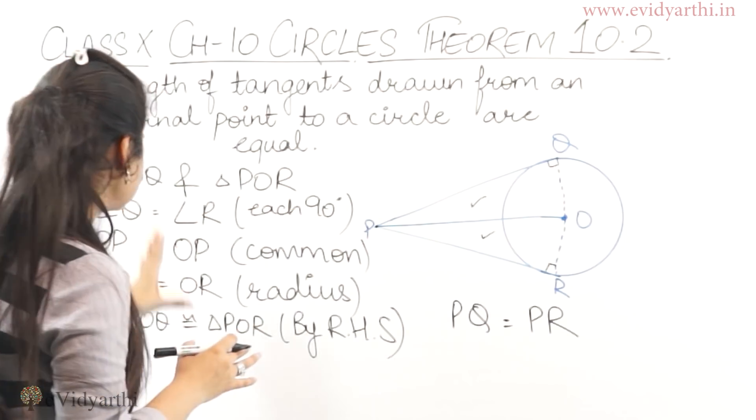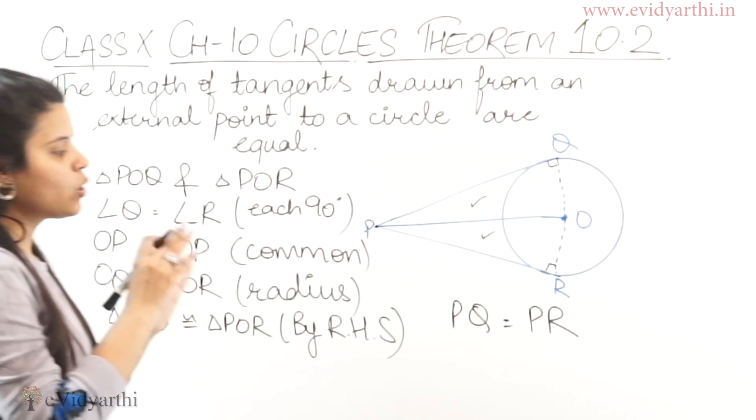And this is a 90 degree angle. So by RHS, these two triangles are congruent, proved.